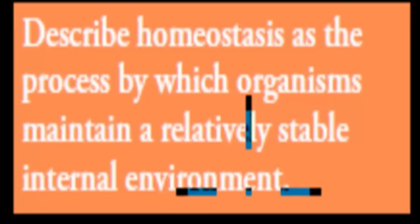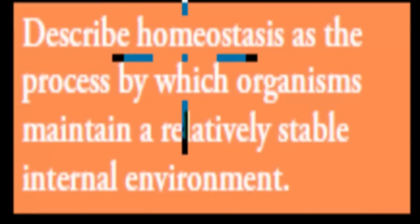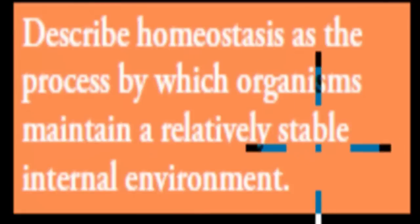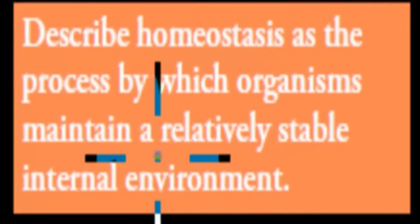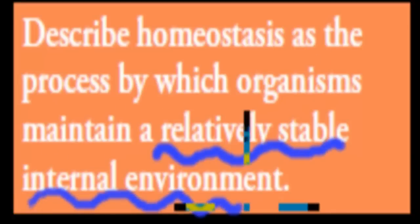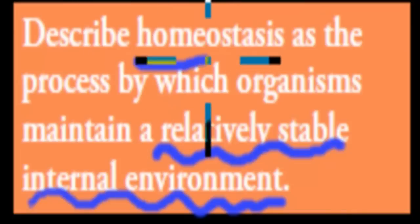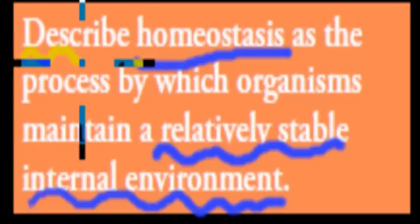In this video, we're going to talk about how it's actually possible to keep a constant internal environment. The dot point says: describe homeostasis as a process by which organisms maintain a relatively stable internal environment. So we're going to talk about how it's possible to maintain a relatively stable internal environment through homeostasis, and the actual verb is 'describe', so we have to describe it.